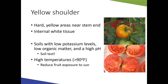Yellow shoulder produces hard, yellow areas near the stem end of the fruit that don't fully ripen. The internal tissue remains white and hard. This is commonly seen in plants growing in soil with low potassium levels, low organic matter, and high pH — another reason to do a soil test. High temperatures above 90 degrees can also cause this, especially for sun-exposed fruit. If it's heat-related, there's not much you can do except wait for cooler temperatures.